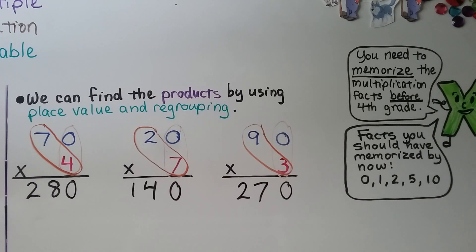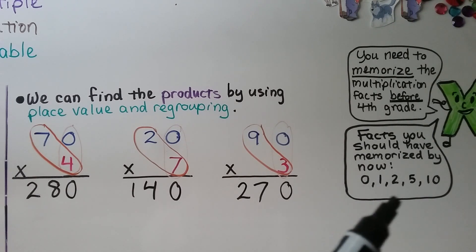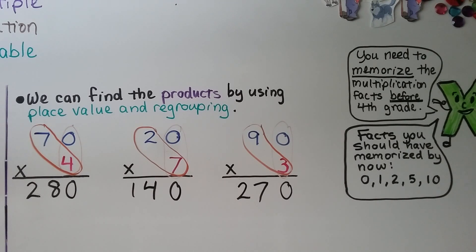Keep working on memorizing your multiplication facts — you want to definitely know them before you start fourth grade. By now you should have memorized the 0s, 1s, 2s, 5s, and 10s all the way up to 10, and you need to know them as quickly as you know 1 plus 1. So keep working on them.